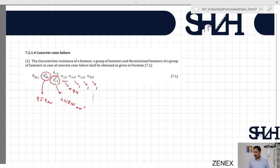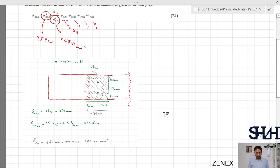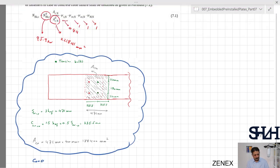These factors are all one, so the only parameter which changed is A_c,N. Let's have a look at what we determined earlier for the concrete cone failure. This calculation is valid for the bolts that are in tension, not all the bolts. Only these two bolts which have been under tension are considered for calculation of A_c,N.